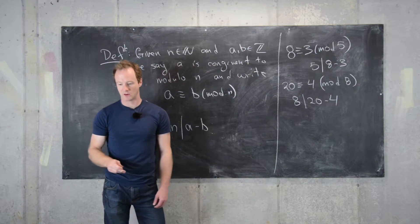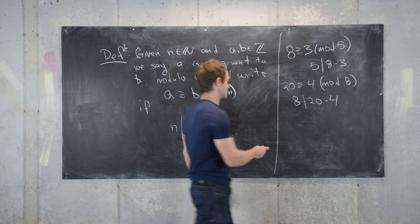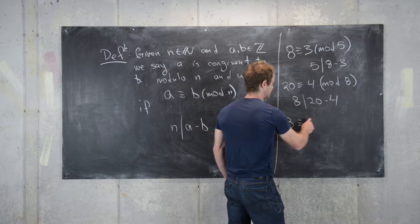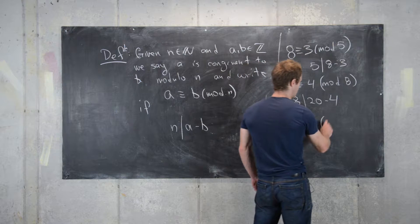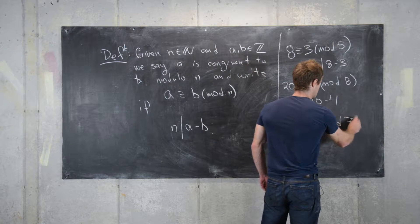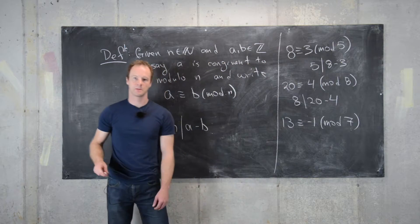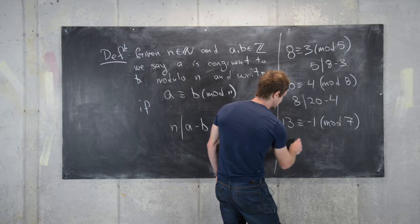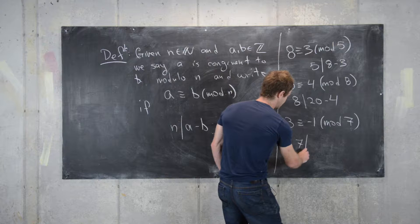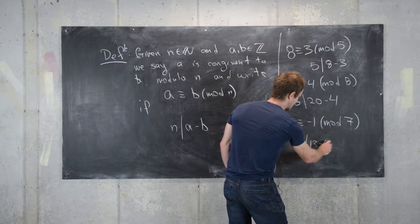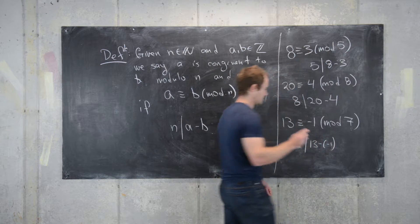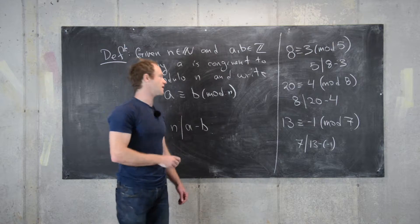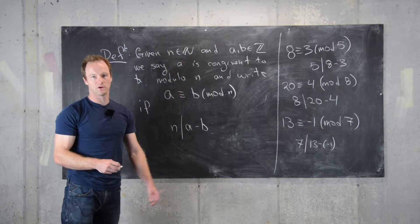One more example: thirteen is congruent to negative one mod seven, because seven divides thirteen minus negative one, which is fourteen.